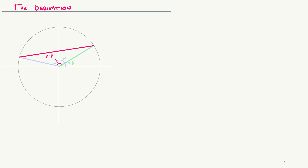We're going to be looking at the angle formed between both terminal sides of these two angles — the angle alpha minus beta. I'm going to name this triangle OIG, where O is at the origin, I is the point (cosine alpha, sine alpha), and G is the point (cosine beta, sine beta).